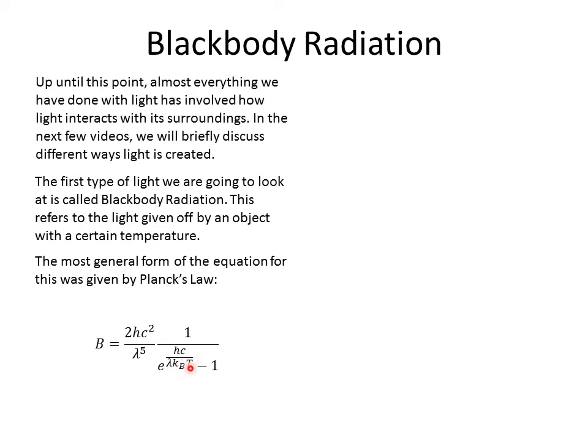We'll notice that we have temperature. So this is the temperature of the object showing up, h being Planck's constant and c being the speed of light again, and minus one to complete out the equation.